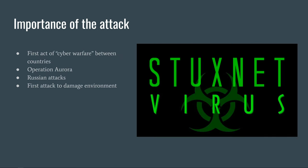Stuxnet is important because it was the first act of cyberwarfare between countries in which military equipment was physically damaged. Stuxnet highlighted flaws in existing security assumptions, as it was able to damage industrial systems not connected to the internet. Prior cyberattacks before Stuxnet included Operation Aurora and a series of Russian cyberattacks against Georgia. Stuxnet differed because it was able to jump the air gap between isolated systems and affect the system while network administrators were performing updates. It was also the first attack to affect the physical environment while being completely undetectable.